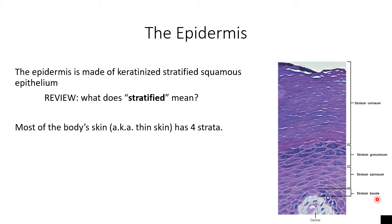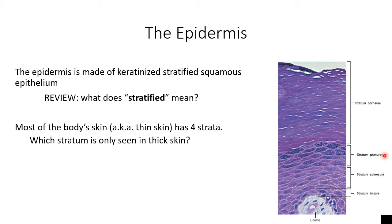These four strata are found in both thin skin and thick skin, but when we talk about thick skin — which is on the palms of your hands or the soles of your feet — we have an extra stratum called stratum lucidum. Stratum lucidum is a clear layer of cells wedged in between stratum granulosum and stratum corneum.